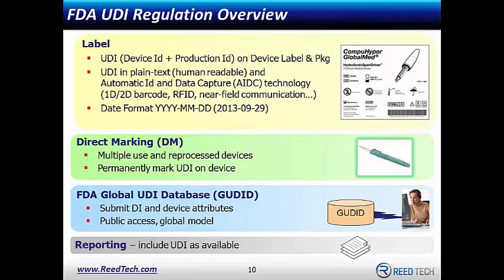Here's a quick refresher. The FDA UDI regulation, published on September 24th, 2013, breaks into four different parts. The first part deals with the physical label — be it on the package or the product — requiring the UDI, the unique device identification, which is made up of a device ID as well as a production or product ID. These go on the label and package. It must be in plain text — human readable — and also machine readable: AIDC, barcode, RFID, and other technologies. There is a specific date format: four characters of year, two characters of month, two characters of day, separated by hyphens.